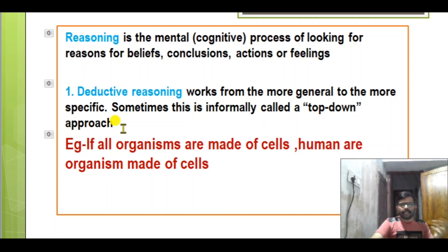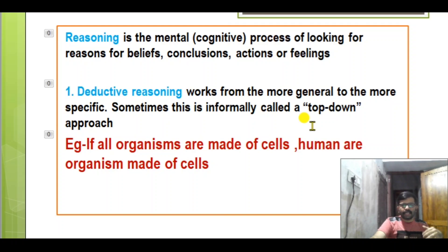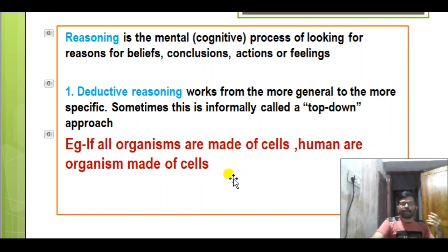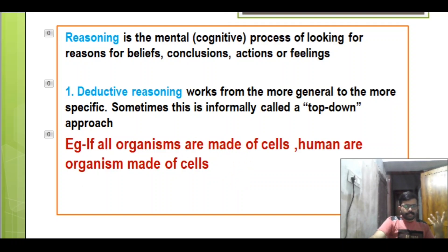Deductive reasoning is general to specific. Sometimes this is informally called the top-down approach. For example, if all organisms are made of cells, and humans are organisms, then humans are made of cells. That is general to specific — that is deductive reasoning.